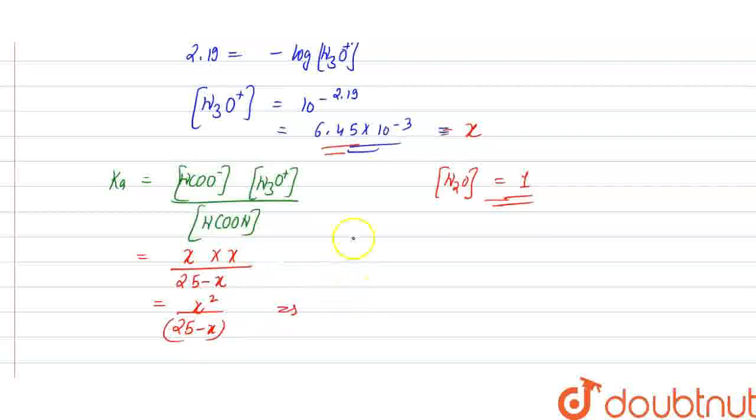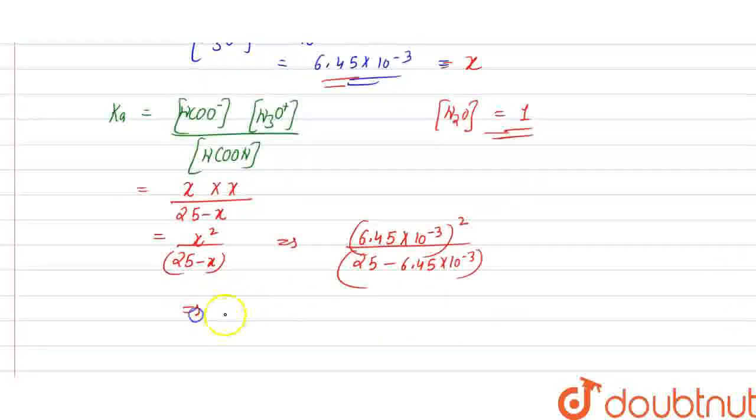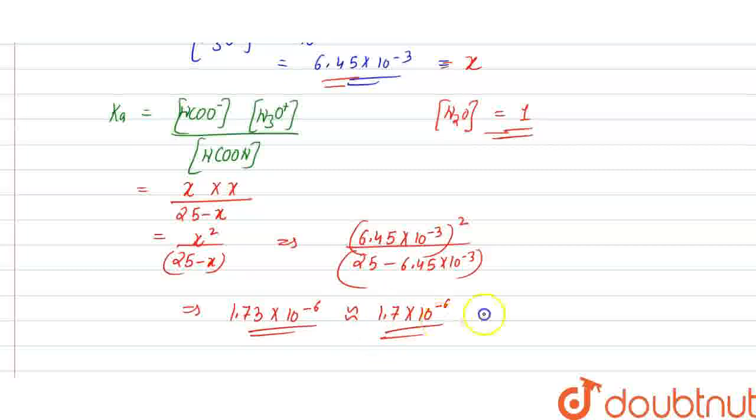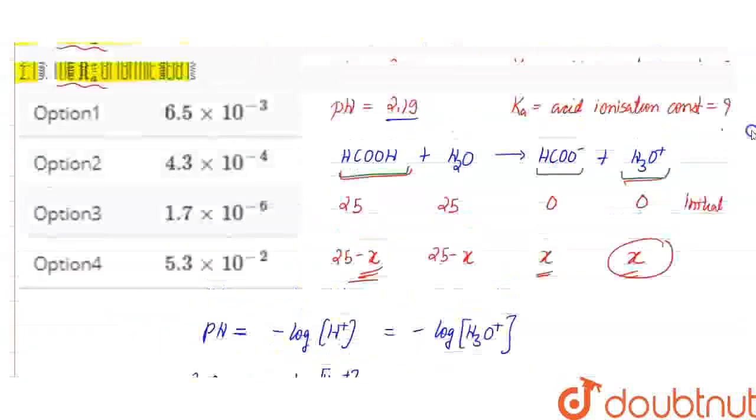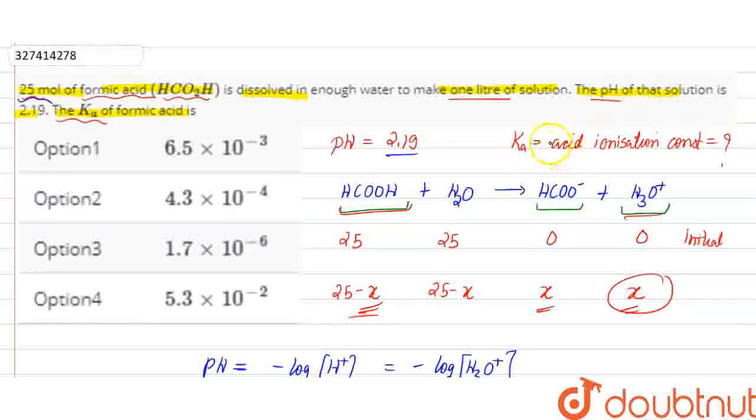The value of X we calculated is 6.45 × 10⁻³. This will be (6.45 × 10⁻³)² over (25 - 6.45 × 10⁻³). When I calculate this, my answer will be 1.73 × 10⁻⁶, approximately 1.7 × 10⁻⁶. This is my acid ionization constant value.